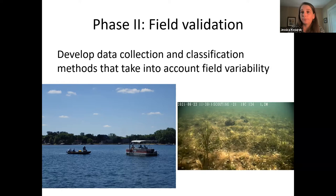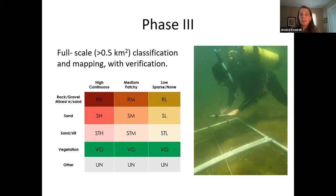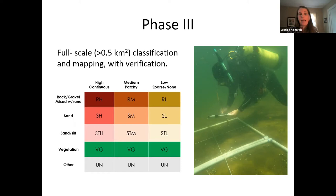Phase three — the continuation project I'm presenting on right now — takes the information developed in phases one and two and does a full-scale classification and mapping. Rather than looking at individual detailed locations, we'll be able to map a large area of a lake and/or riverbed, mapping whether we have different types of substrate based on acoustic backscatter information — mapping high, low, and medium mussel density in different substrate types over a large area.